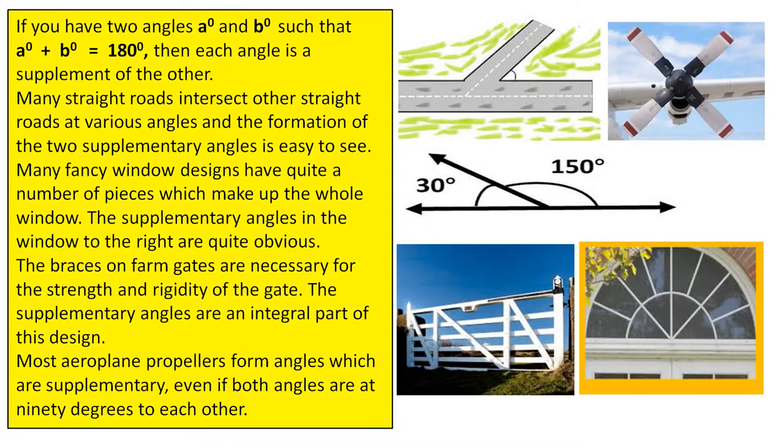Many straight roads intersect other straight roads at various angles, and the formation of the two supplementary angles is easy to see.